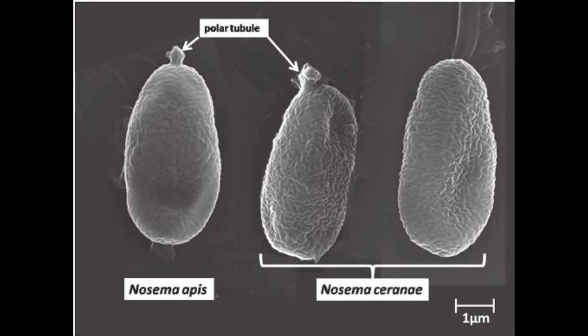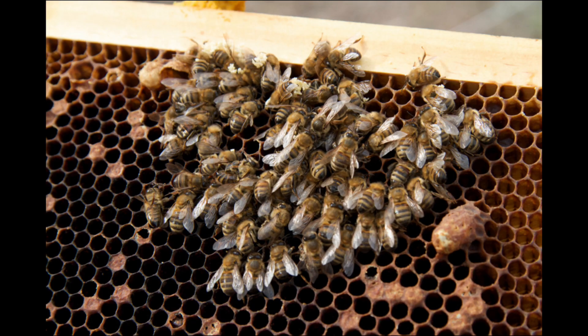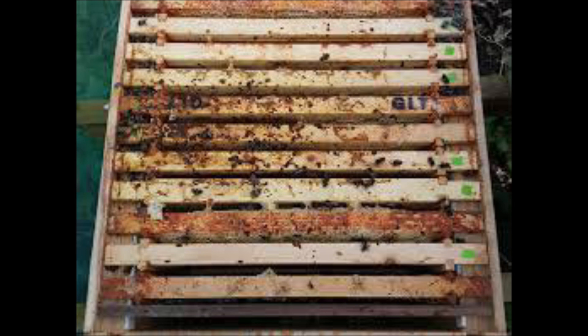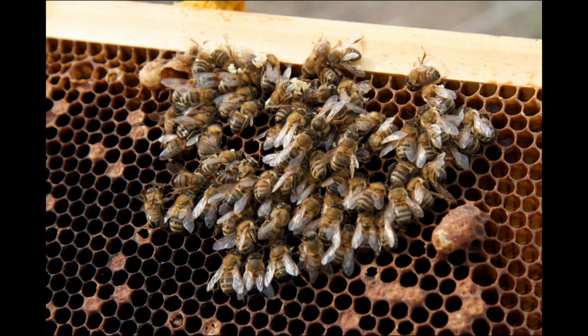Nosema-infected bees do not look much different from non-infected individuals, but certain traits are evident even before microscopic analysis and confirmation of disease. The lifespan of infected bees is often reduced, and infected colonies often dwindle in late winter or early spring. In the case of Nosema ceranae, colony death can be even faster than with Nosema apis and may take only a few days.